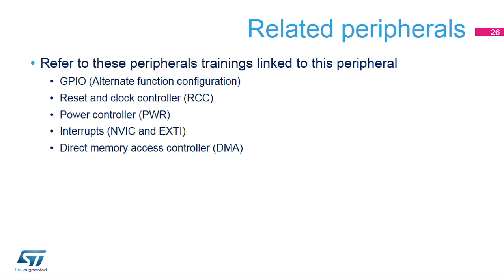This is a list of peripherals related to the USART. Please refer to these peripheral trainings for more information if needed: General Purpose Inputs and Outputs, Reset and Clock Controller, Power Controller, Interrupts Controller, and Direct Memory Access Controller.